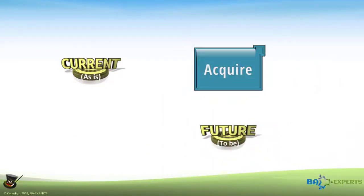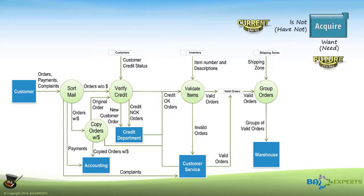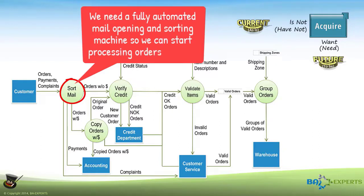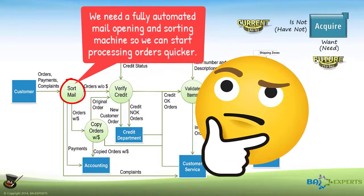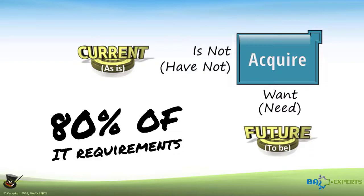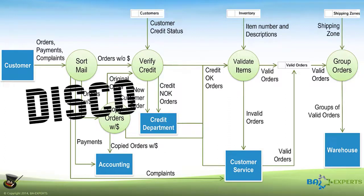The most common type of change that people think about are the things that they want but don't currently have. We humans can be greedy, and we often think life would be better if we only had this other thing. For example, the domain experts might find the sort-mail function to be the most boring part of their job. They might say, 'We need a fully automated mail opening and sorting machine so we can start processing orders quicker.' It's not clear whether that requirement is good, bad, or indifferent, because that would require further analysis. The acquire category typically contains 80% of IT requirements, and they are the easiest to elicit from stakeholders. Since most people tell us what they want to acquire, we will not spend more time on this type of requirement. The visualization that the DFD provides will guide your stakeholders to discover needs in this category.